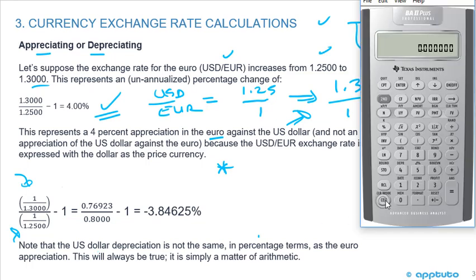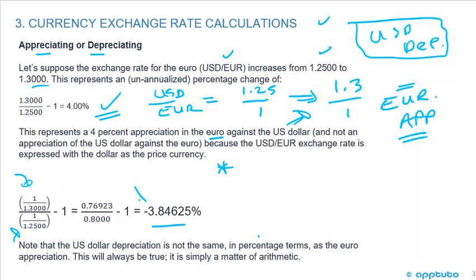So then we're going to just finish that off. 0.76923 divided by 0.8, and we'll subtract the 1 and multiply by 100 just to get a nice round number. And we can see that the depreciation was negative 3.84625. So don't forget to see that negative sign in there, negative 3.85, if you're going to say closest to.